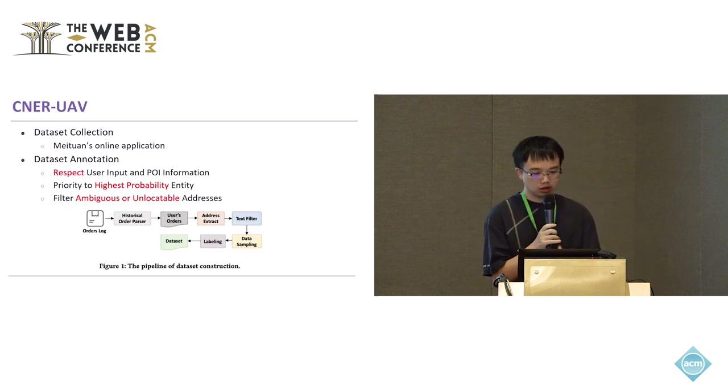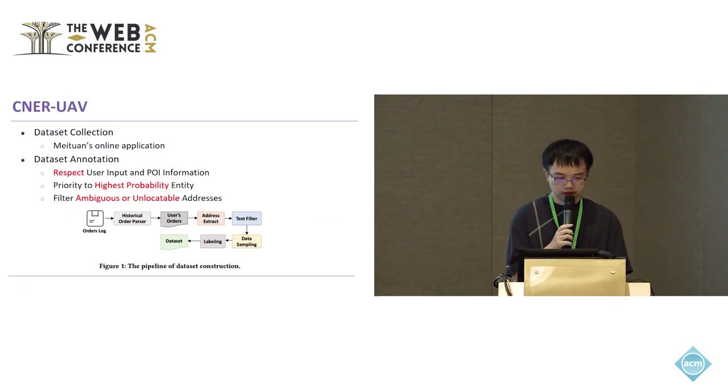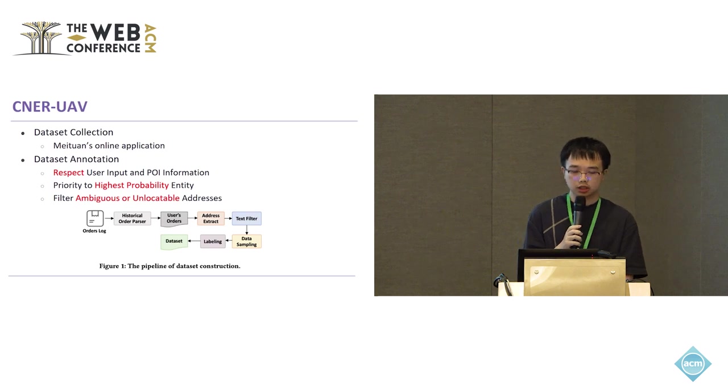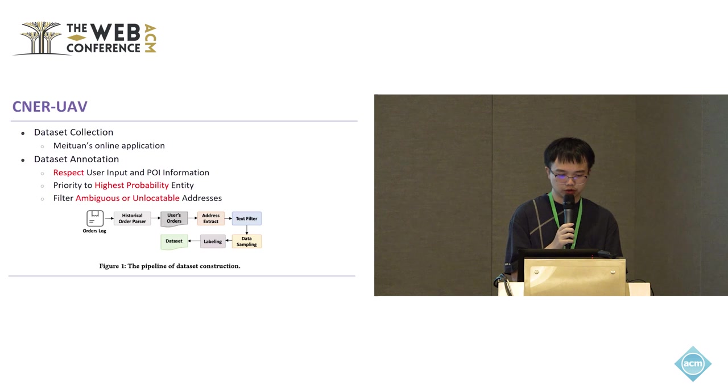Our dataset compilation process follows this flowchart. Initially, we parse historical order logs to extract user order information. Subsequently, we identify and extract addresses, applying predefined rules to filter out relevant ones. Next, we proceed to sample and annotate the data, which involves labeling by human annotators, GPT, and ChatGLM model. Further elaboration of the dataset collection and annotation procedures can be found in our original paper.